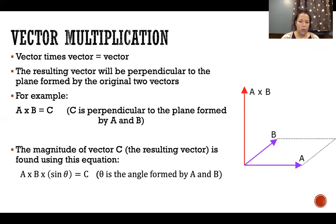The magnitude of the resulting vector—that red vector sticking straight up—we would find using this equation: it would be a times b, so the magnitudes of those two vectors that we started with, times sine of theta.